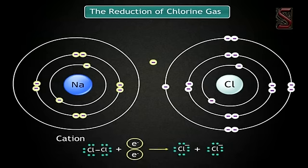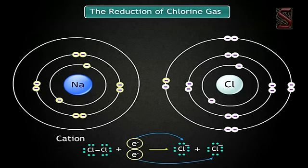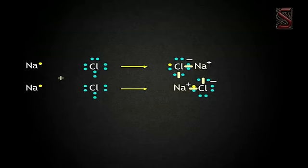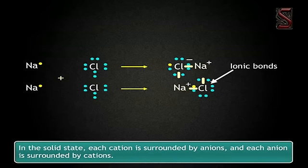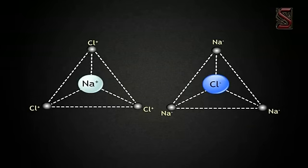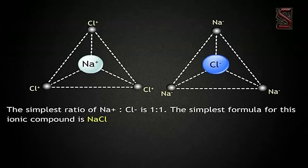The reduction of chlorine gas: chlorine is a diatomic element. The covalently bonded Cl₂ molecule gains two electrons to become two chloride ions (Cl⁻, anions). Chlorine is said to be reduced. Combining the above oxidation and reduction processes, the overall effect is the transfer of one electron from sodium to chlorine. The oppositely charged sodium and chloride ions attract each other and ionic bonds are formed. In the solid state, each cation is surrounded by anions and each anion is surrounded by cations, arranging themselves in a three-dimensional crystal.